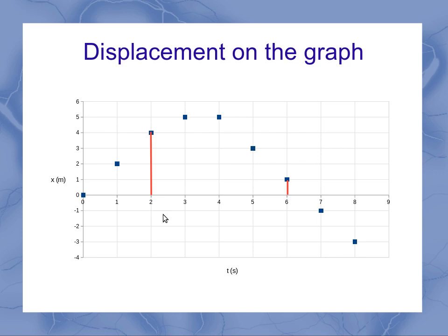So if we use our same 2 seconds and 6 seconds, we first have to figure out, well, what's my position at 2 seconds? That's 4 meters. What's my position at 6 seconds? That's going to be 1 meter. So my displacement is moving from 4 meters to 3 meters, which would be a displacement of minus 3 meters.